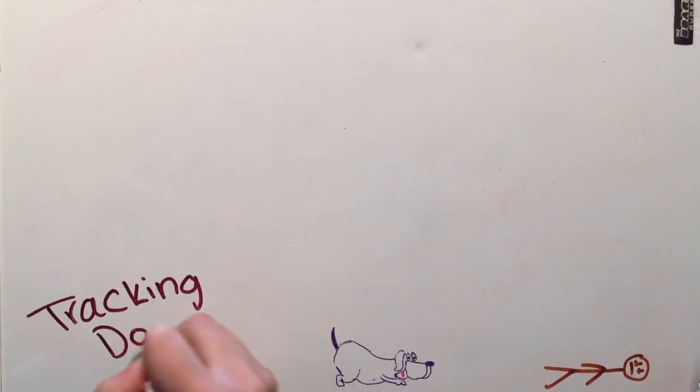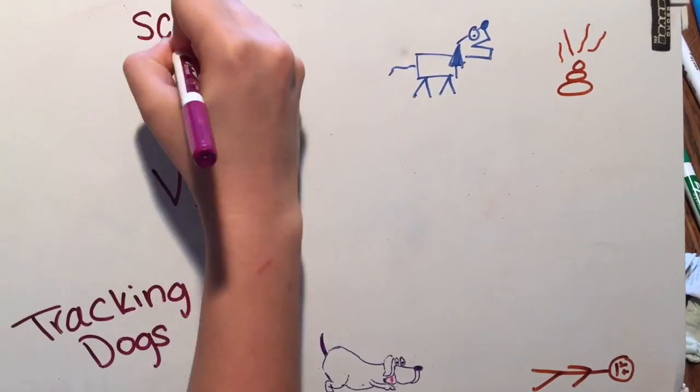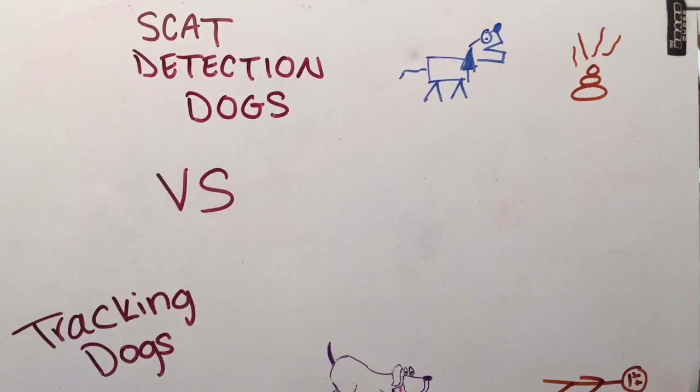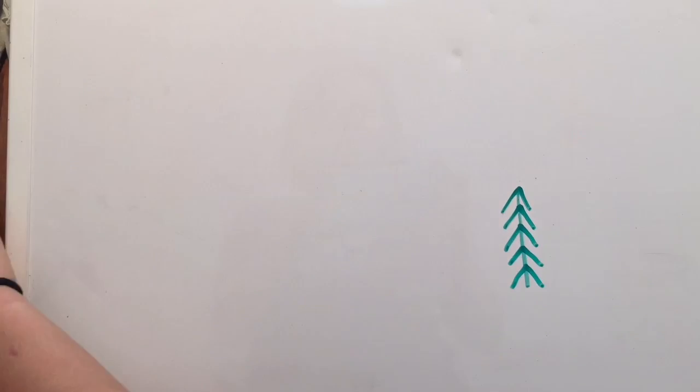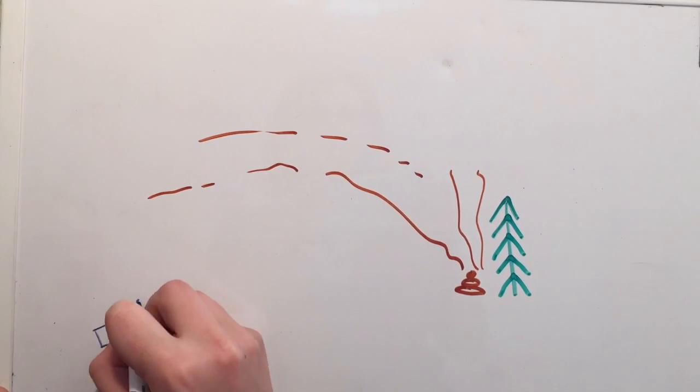Scat detection dogs are special because they are air snuffers. Their nose is in the air rather than tracking dogs who are head down ground snuffers. Tracking dogs for lost people follow a scented trail on the ground, but scat detection dogs have no trail to follow because the scat is in one location only and therefore their head stays up.